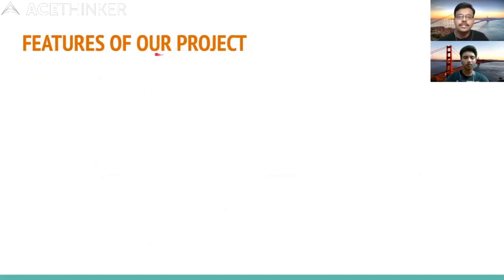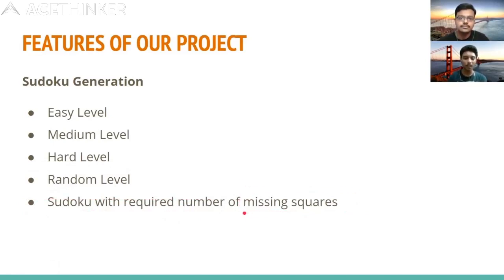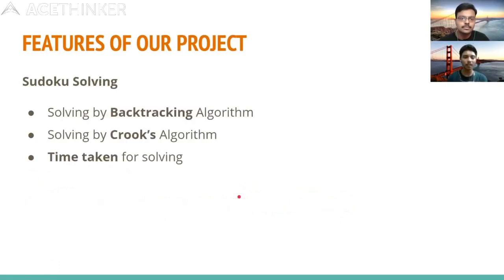Now, what are the features of our project? For Sudoku generation, we provide multiple methods: difficulty levels of easy, medium, and hard; a random level; and generation with a required number of missing squares. For solving, we use a backtracking algorithm and the Crooks algorithm, and we show users how much time each method takes to solve a given puzzle.